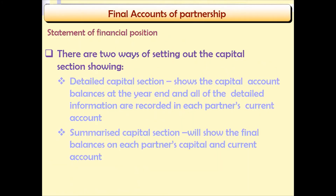There are two ways of setting out the capital section in the Statement of Financial Position. One is a detailed capital section, which shows the capital account balances at the end of the year, with all detailed information recorded in each partner's current account. The second is a summarized capital section, which shows the final capital balances of each partner's capital and current account.